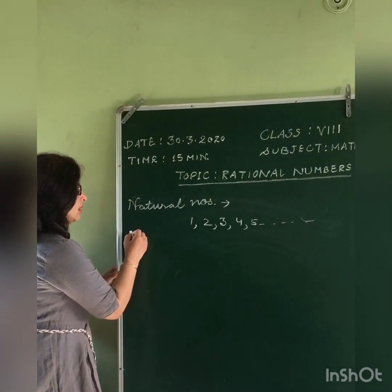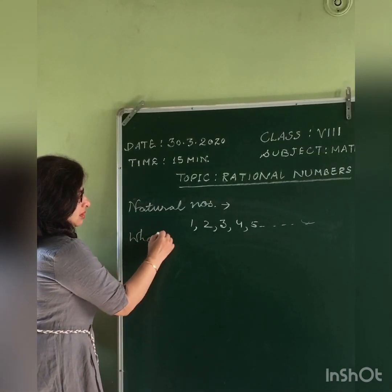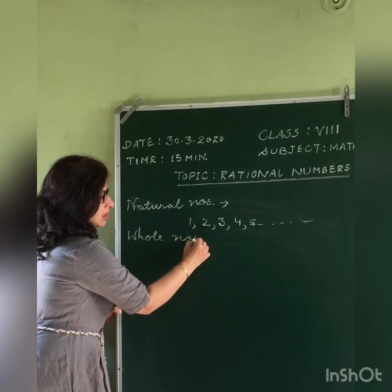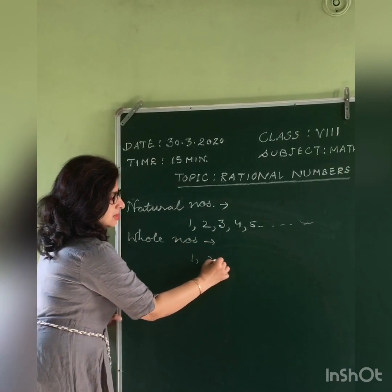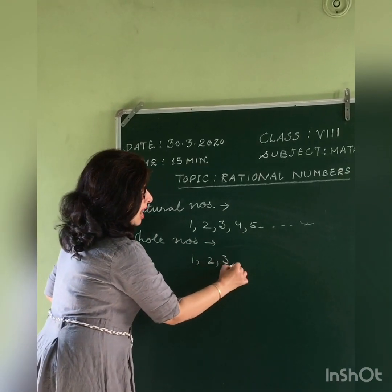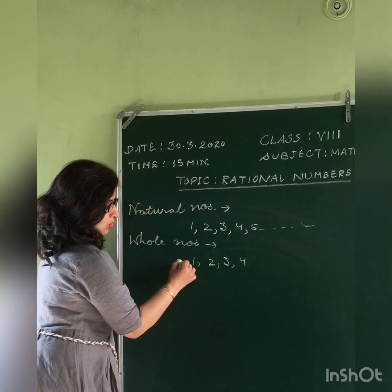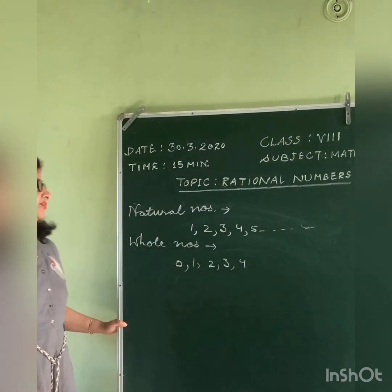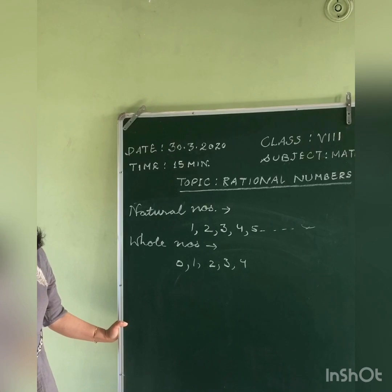Then whole numbers. Counting numbers and 0 together are whole numbers.